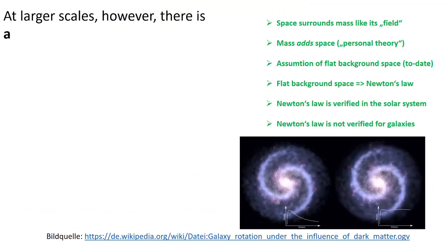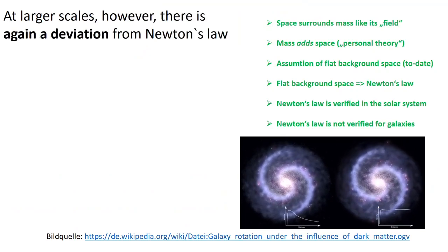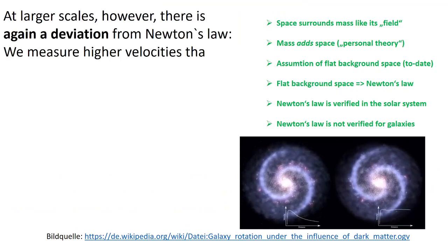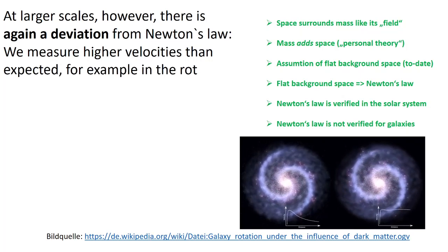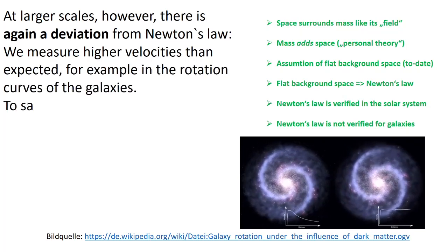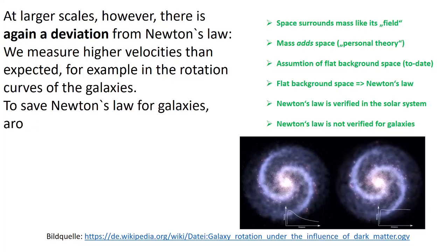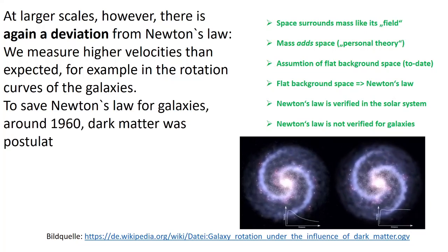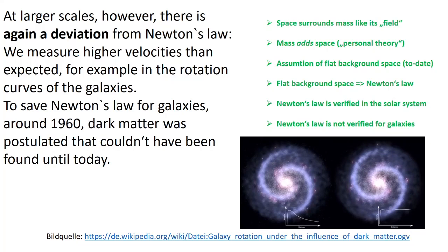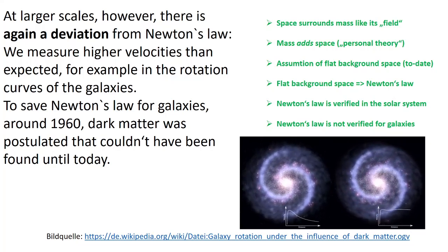At larger scales, however, there is again a deviation from Newton's law. We measure higher velocities than expected, for example in the rotation curves of the galaxies. To save Newton's law for galaxies, around 1960 dark matter was postulated that couldn't have been found until today.